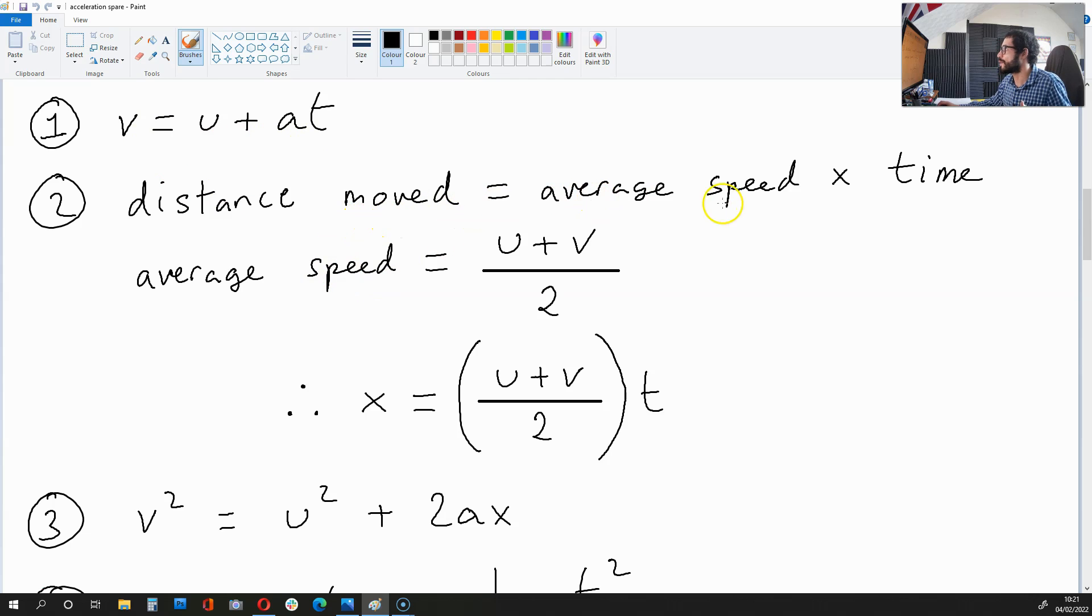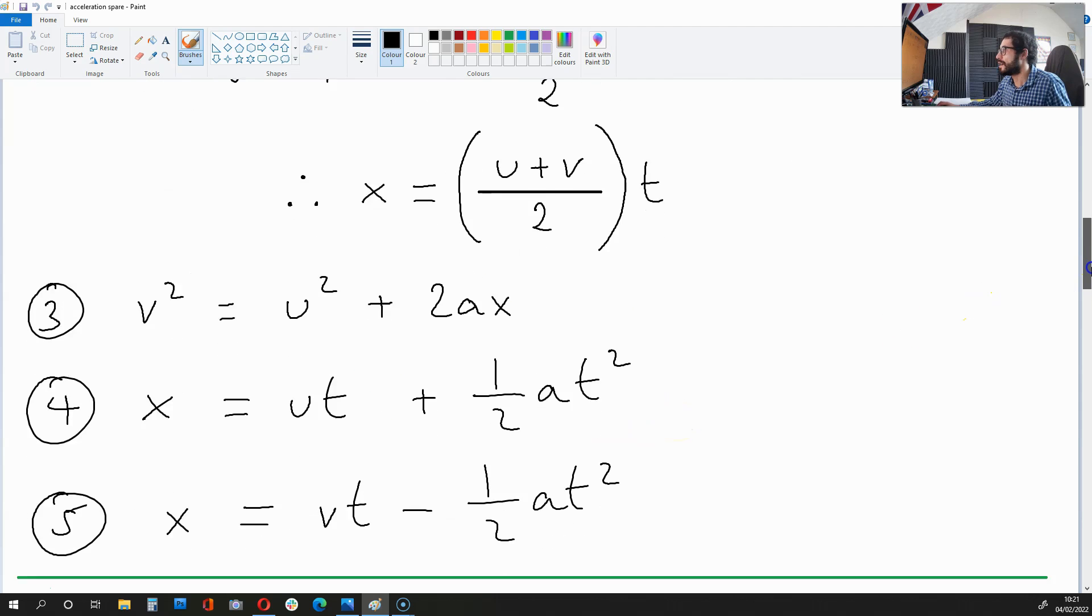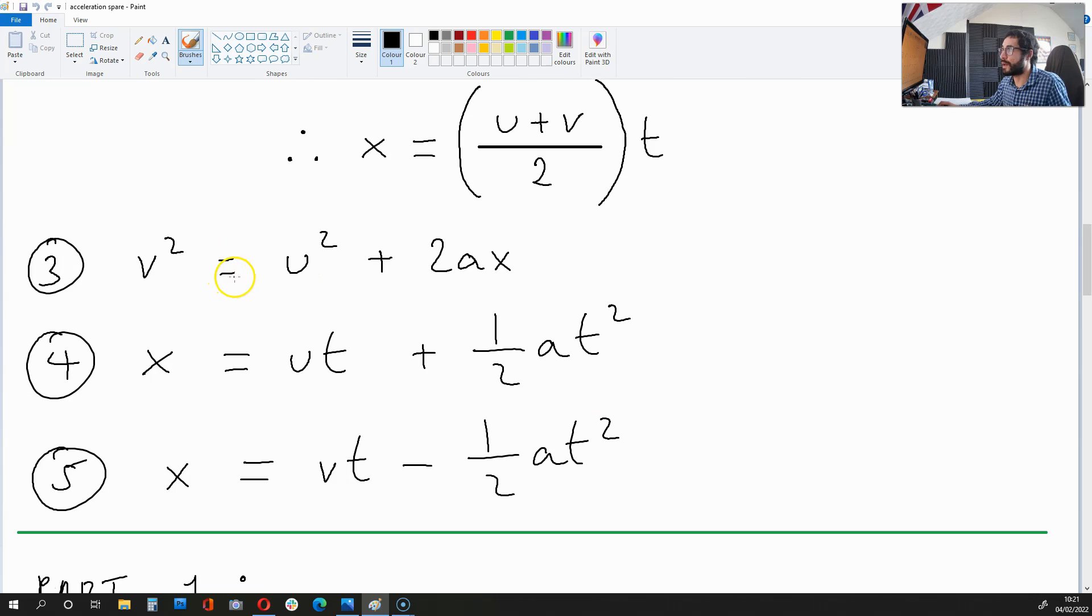Distance moved is equal to average speed times time. Average speed is u plus v over 2. Therefore, x is equal to u plus v over 2 times t.